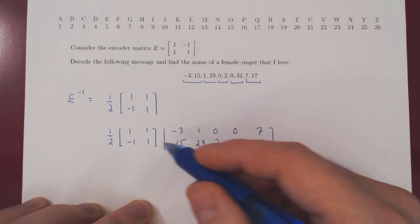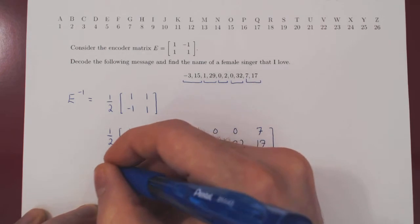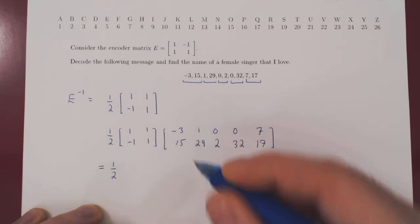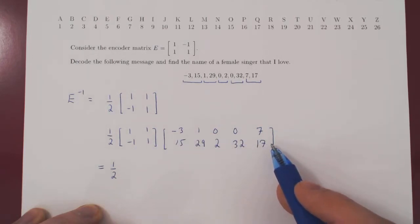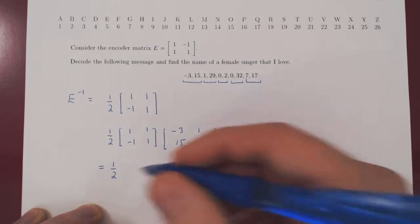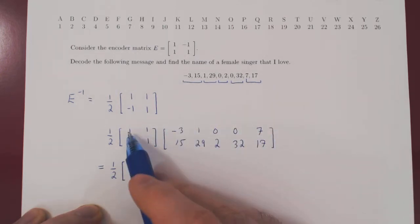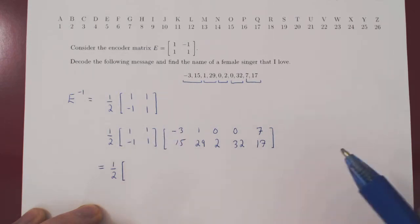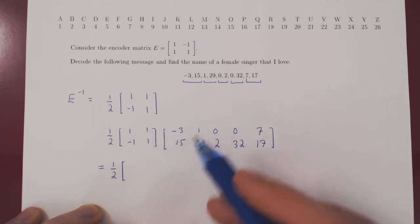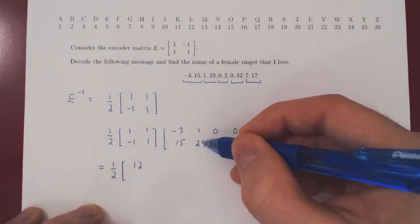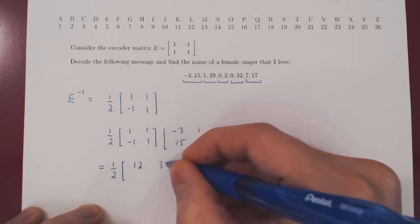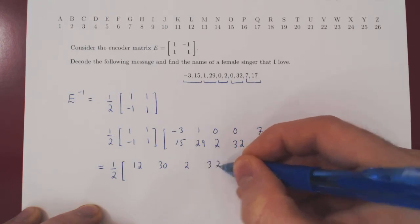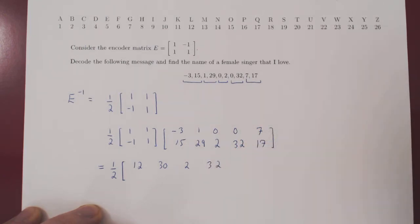Okay, so let's perform this multiplication. Let's leave the 1 half in front for now. Let's multiply our two matrices, and then we'll multiply every entry of our matrix by 1 half. So first row, we'll do first entry plus second entry. So negative 3 plus 15 is 12, 1 plus 29, 30, 0 plus 2, 2, 0 plus 32, 32, 7 plus 17, 24.